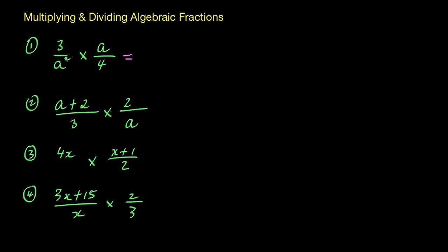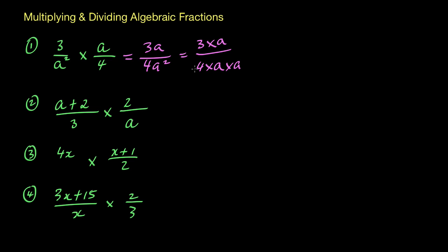So what we're doing here is multiplying 3 times a and you get 3a. On the bottom we've got 4 times a squared, that's going to give us 4a squared. Now the 3 and 4 don't have any common factors, so there's nothing to cancel there, but we've got a on the top and on the denominator we've got a multiplied by a. Because they're all multiplying, we can cancel out one of these a's on the bottom with the a on top, and we're left with 3 over 4a.